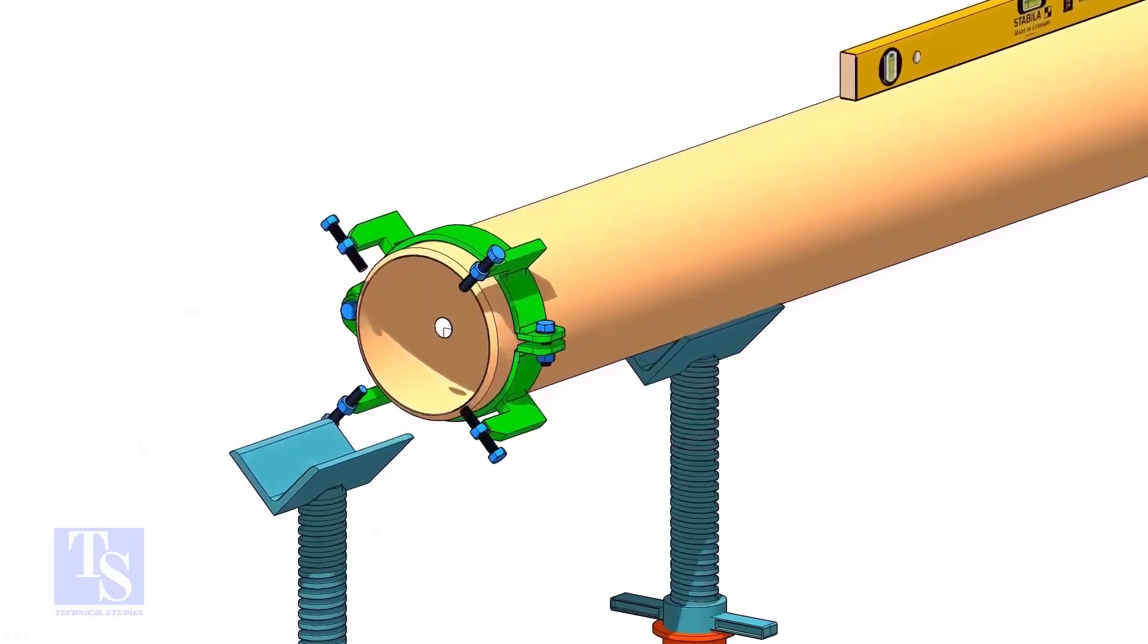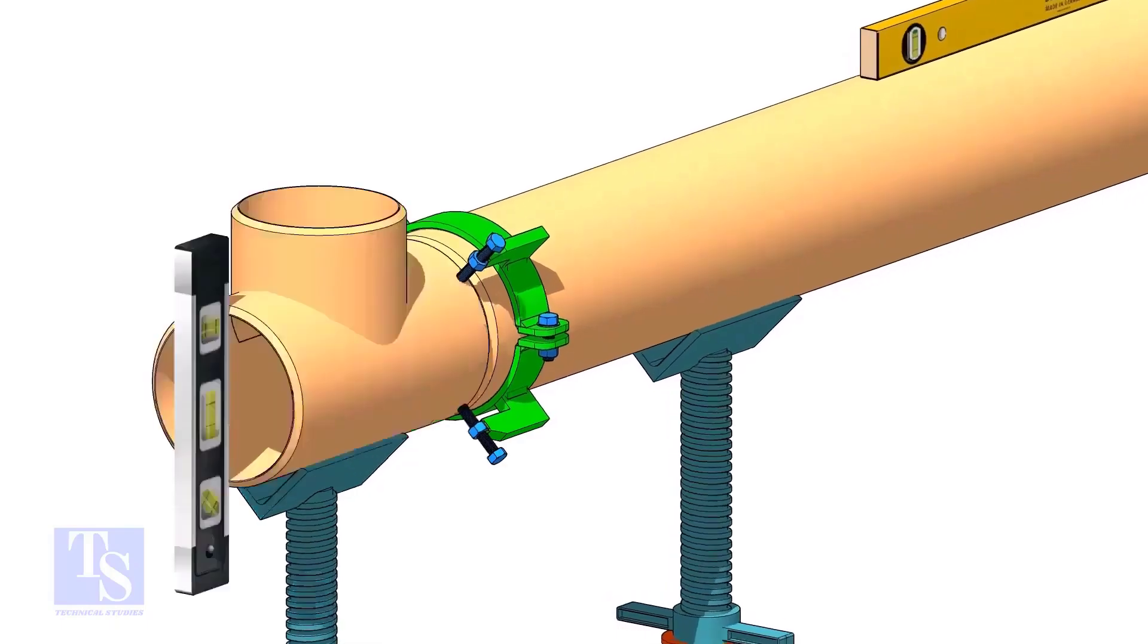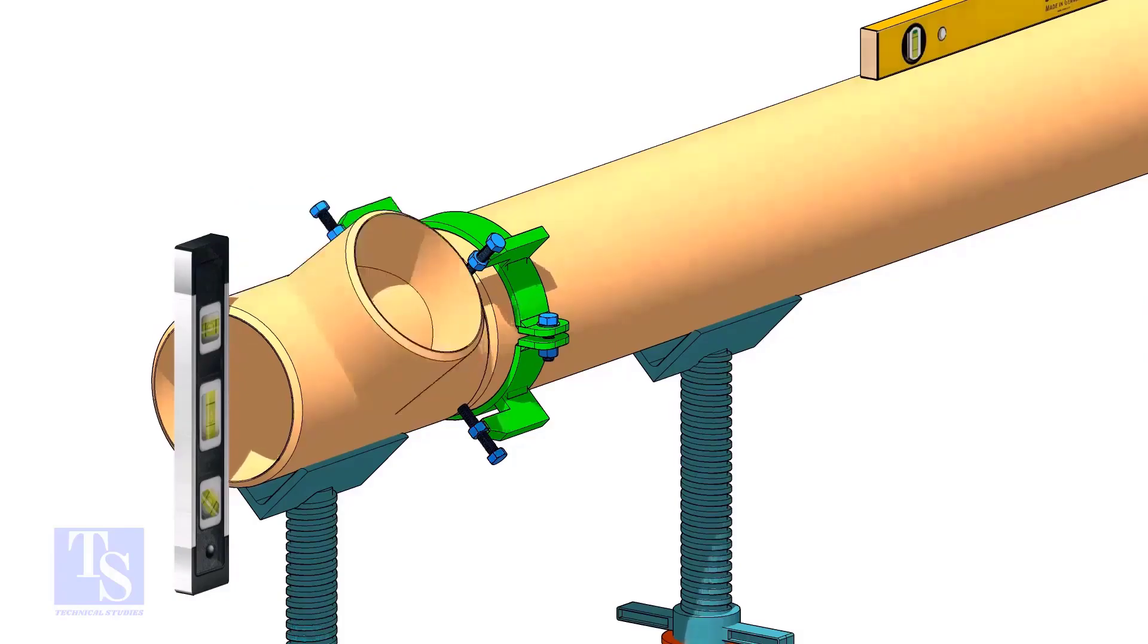Put the clamp, the gap rod and the T as shown. Make sure the overlap and the gap are equal around the joint. Rotate the T in the required direction.